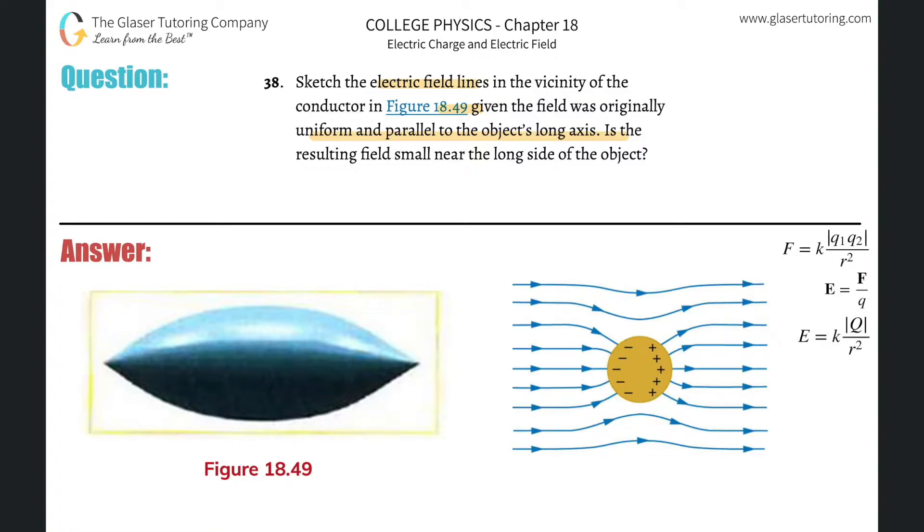So basically in the text, when we have some type of object, this is basically what's going to happen to the electric field. We're going to have these lines, some of the lines at the top being nice and straight, and then they're going to start to kind of curve into the object more or less.